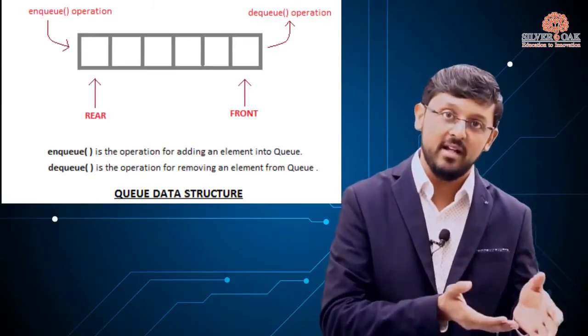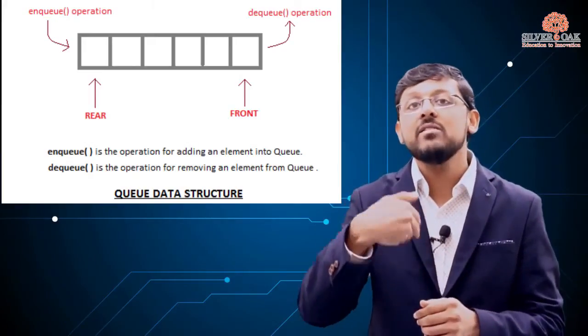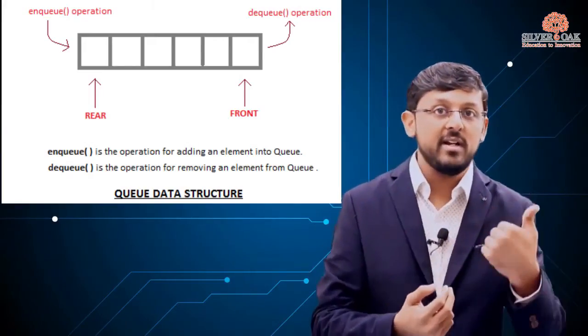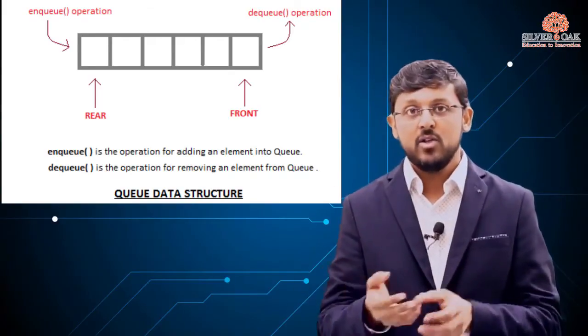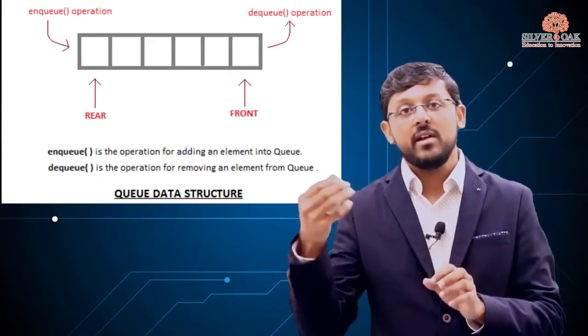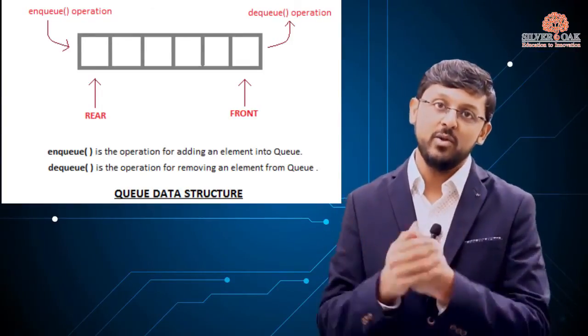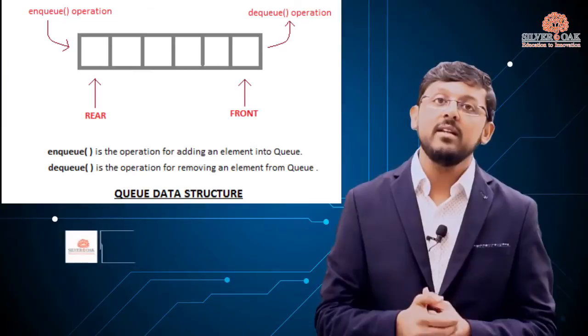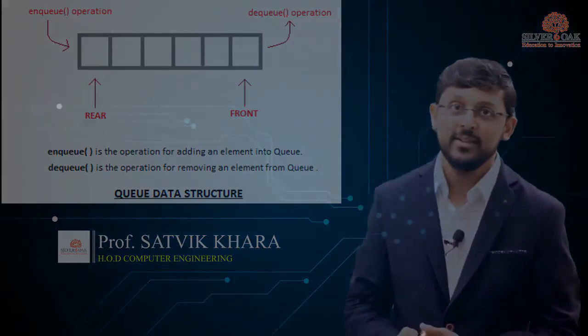Two pointers are required for implementing a queue: front and rear, called F and R. The rear pointer is used for insertion, and the front pointer for deletion. We will see the detailed algorithm and implementation in the next session. Thank you.